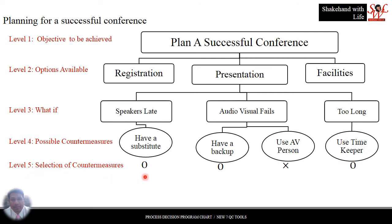To select the countermeasures — if you select a countermeasure, write O for okay. Having a substitute is okay. If the audiovisual fails, then having a backup is okay, but using an AV person is not suitable, so discard this. Using a timekeeper is a good countermeasure, so select this. This way we can make a PDPC for planning of a successful conference.